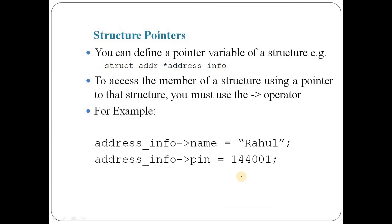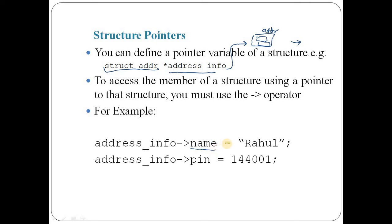Similarly, we can also define pointers to a structure. If we write struct ADDR star addressinfo, then this star addressinfo will point to a location where a variable of ADDR structure type is stored. If we have a pointer variable and want to access the members stored at this location, then we use the arrow operator instead of the dot operator. So addressinfo arrow name is used to initialize a value in this structure, and similarly we can update the value of pin using the arrow operator.